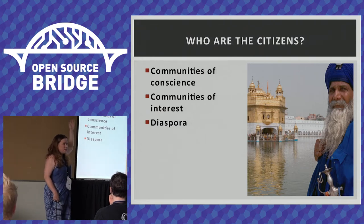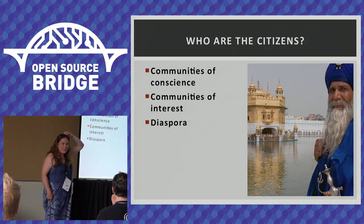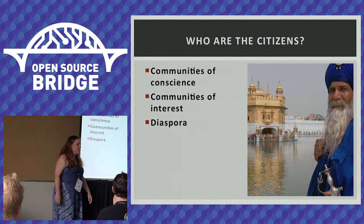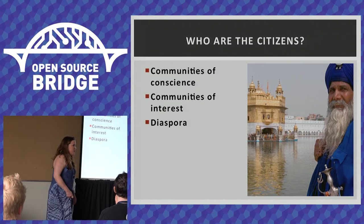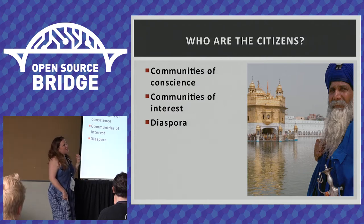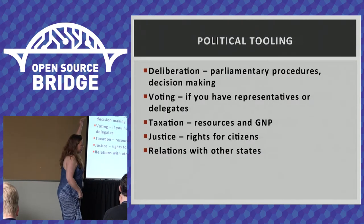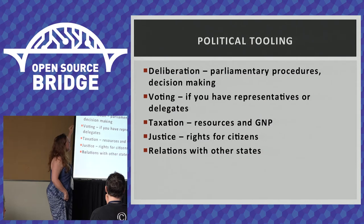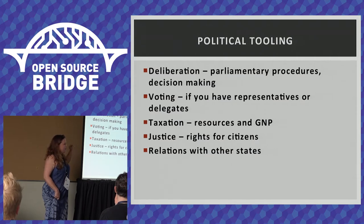Citizens of virtual democracies could be communities of conscience — that seems pretty obvious. Religious groups, communities of interest. Burning Man is really interested in self-governance. And various kinds of diaspora — there are like 19 million Sikhs worldwide, and as far as I know there's no Sikh parliament. There are many cases where different ethnic and religious groups could constitute de jure states, but they don't have political tooling. The big thing I want you to get out of this talk is the difference between an online community and one that has political tooling and the power that comes from being self-governing.